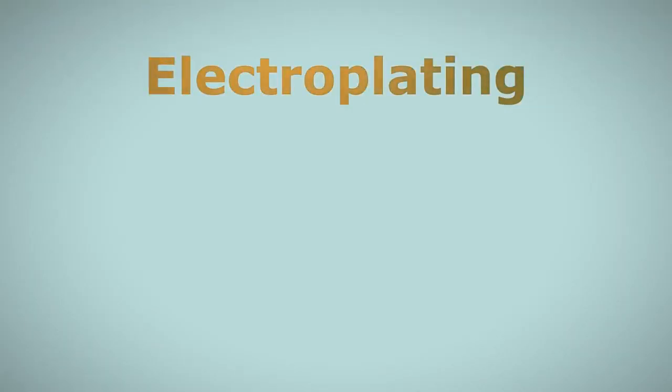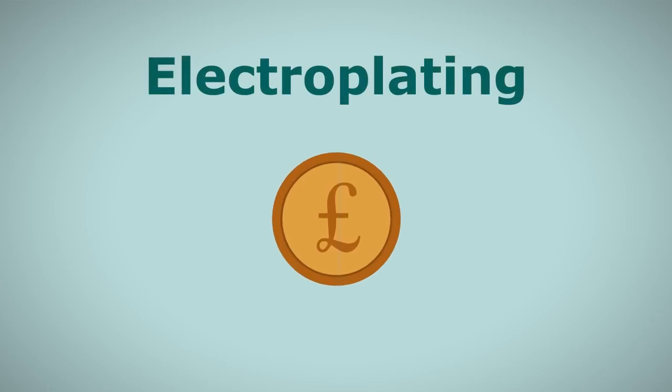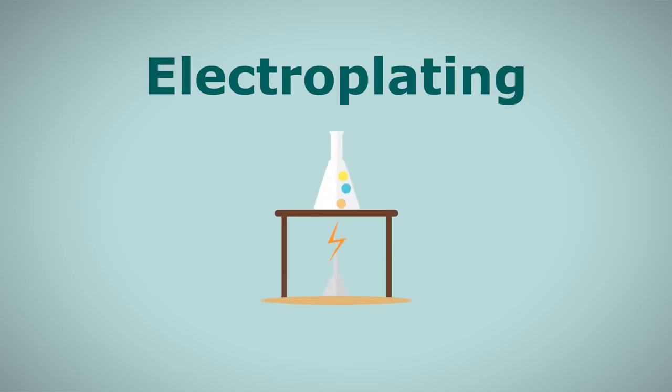In this video we're going to learn about electroplating. Electroplating is the process of coating one metal object with another. It works by electrolysis, which is when electricity is used to drive a chemical reaction.